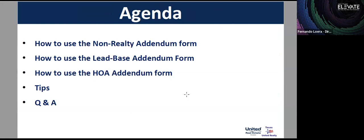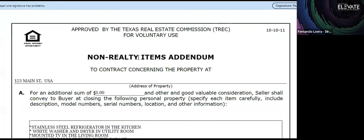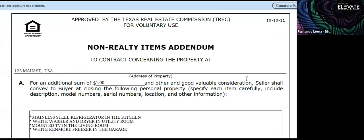Today's agenda: we're going to focus on how to use the non-realty addendum form, the lead-based addendum form, and the HOA addendum form, and then we'll show some tips. First, here's the non-realty addendum form. This form is used whenever you want to convey some appliances or items from the house — it could be both internal or external.